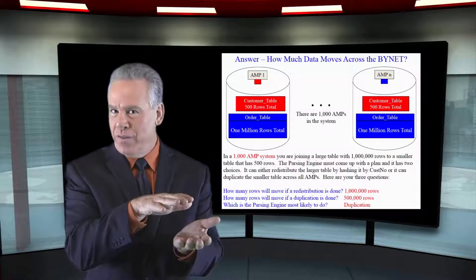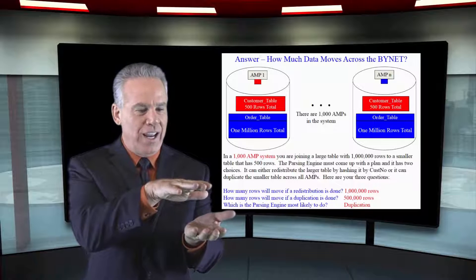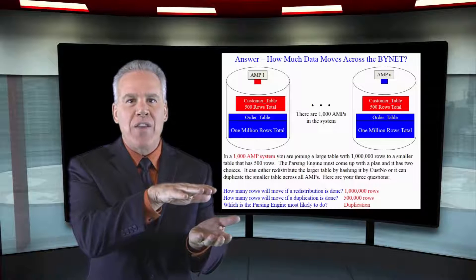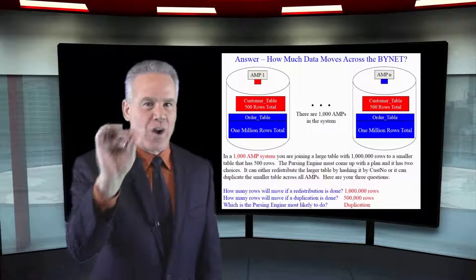all 1,000 of them would be 500 rows on the first amp, 500 rows on the second amp. 500,000 rows would be moving and placed across those amps.